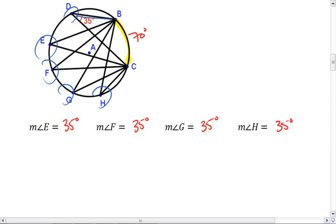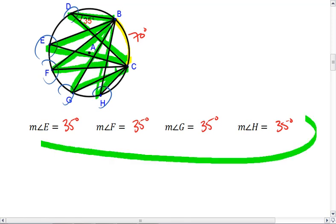Since all of these angles intercept the same arc, they're all congruent at 35 degrees, which is what we see down here.